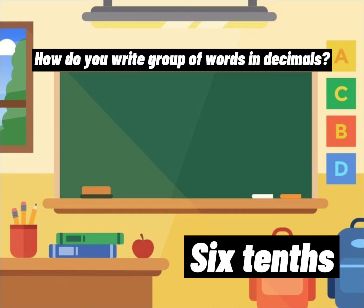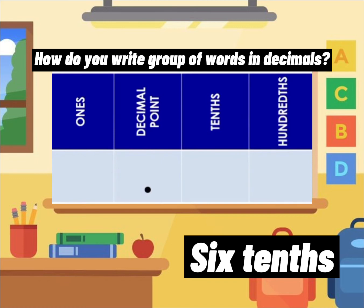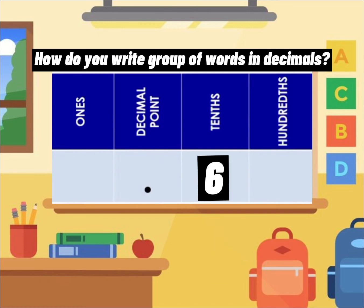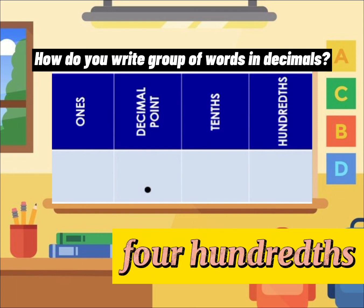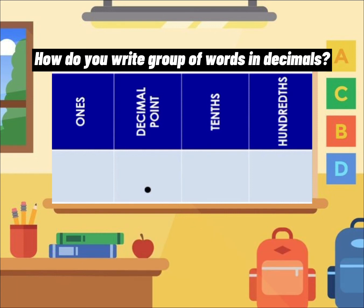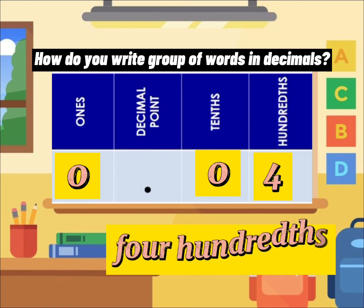How do you write each group of words in decimal form? For example, six tenths: let's use a place value chart and place 6 in the tenths place. Since we don't have a whole number, we use 0 as a placeholder in the ones place, so the decimal number is 0.6. The next example is four hundredths: place 4 in the hundredths place, use 0 as a placeholder in the tenths place and the ones place, so the decimal number is 0.04.